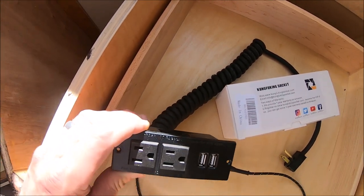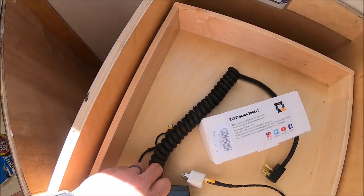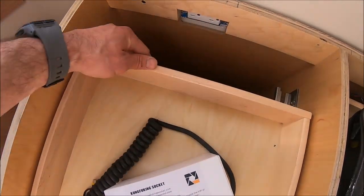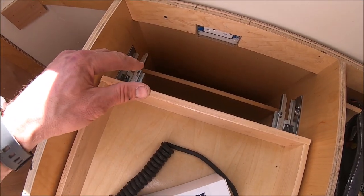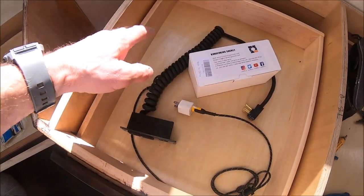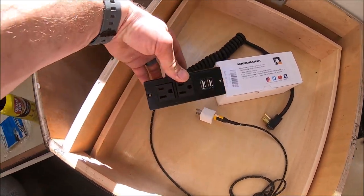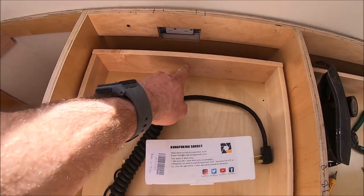The price for the socket as well as the coiled extension cord runs 30 bucks, versus a bracket that installs here that runs upwards of 250 bucks. So this is a quick, easy, inexpensive way to add a plug to the back of the drawer.